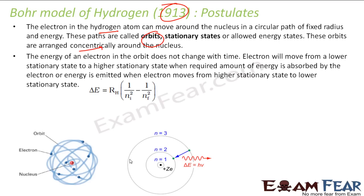The energy of the electron in the orbit does not change with time. For example, if you have an electron here, it will always be the same if it is in this orbit. The electron will move from lower to higher stationary state when the required amount of energy is absorbed or emitted.